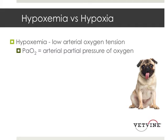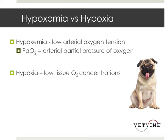Hypoxemia — low arterial oxygen tension, or low arterial oxygen concentration — these two terms are interchangeable. What we really mean is the arterial partial pressure of oxygen, abbreviated PaO2. Hypoxia, as we discussed, refers to low tissue oxygen concentrations.